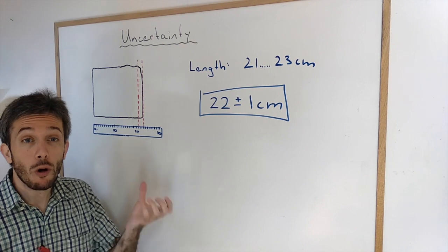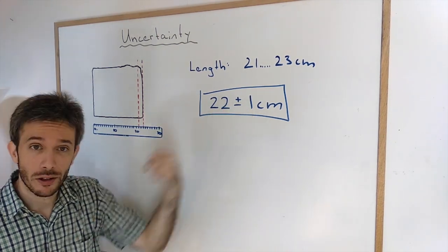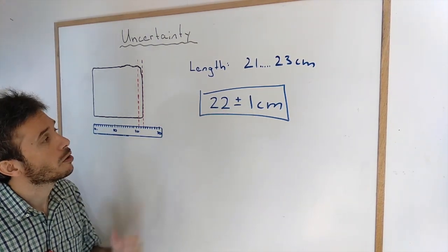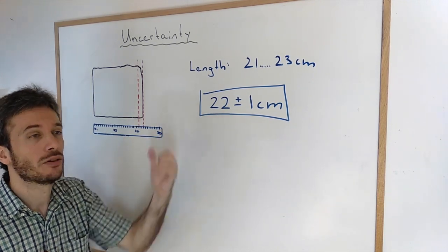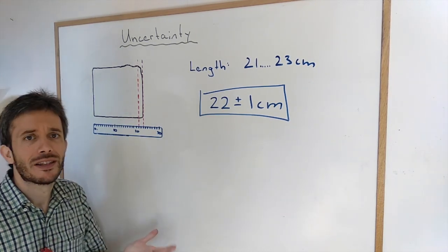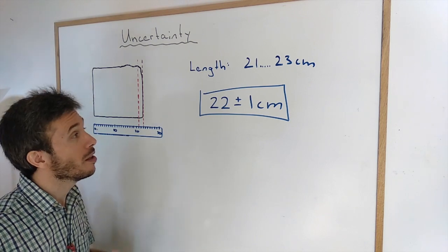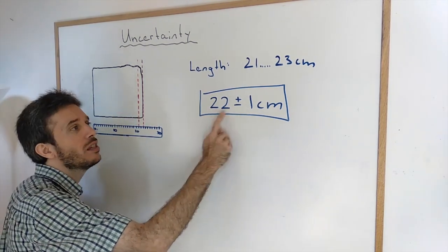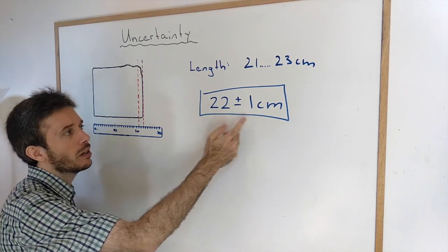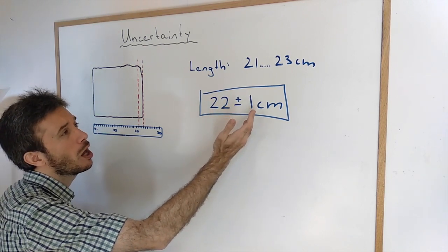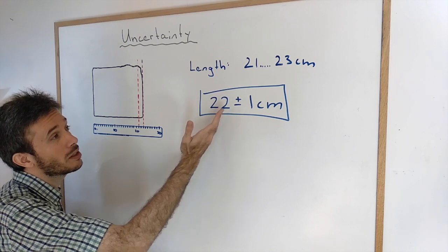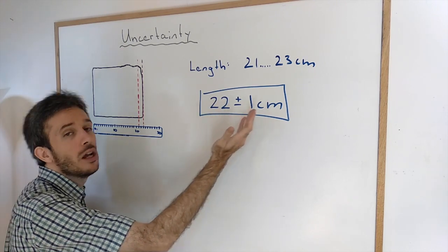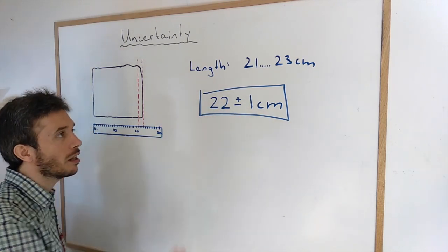So what is the goal of giving a measurement with uncertainty? The goal is to report an accurate measurement. That is a measurement where we're sure that the real value lies within the range of what we're giving. So like 22 plus minus 1, meaning you're absolutely sure that the real value is anything between 21 and 23 centimeters.